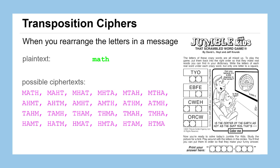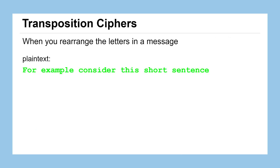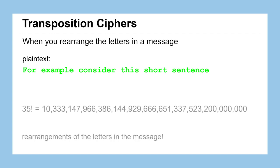But it turns out as our messages grow longer and longer, the number of possible ciphertexts grows incredibly quickly. So for example, take this short sentence in green. There are 35 factorials, different rearrangements of those letters. And that would be an incredibly difficult task for somebody to take some of those scrambled 35 letters and try and put them back together into the original message, possible but incredibly difficult and computationally challenging to do.